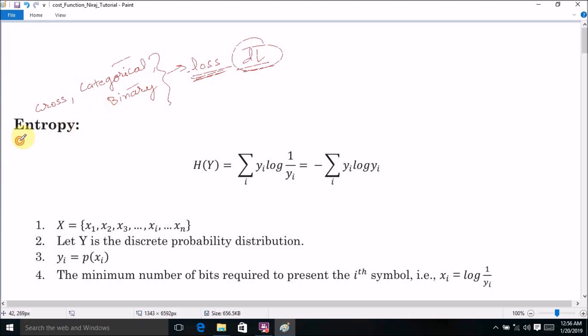But before going into the detail, first of all we have to go through a very brief overview of entropy. Suppose we have a countable set X, countable set of symbols represented by X where symbols are represented as X1, X2, X3, Xi, and Xn.